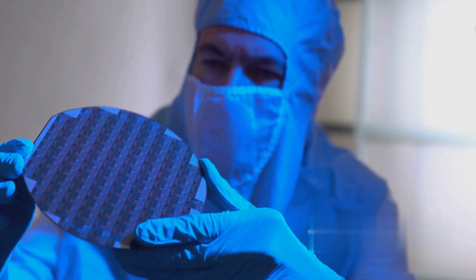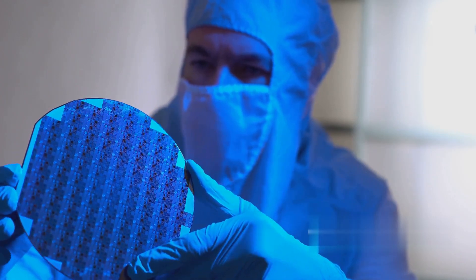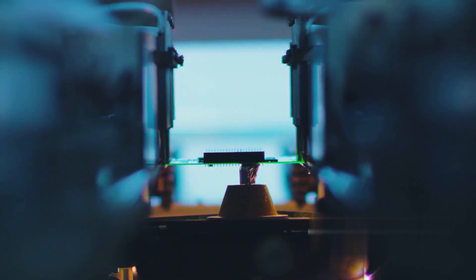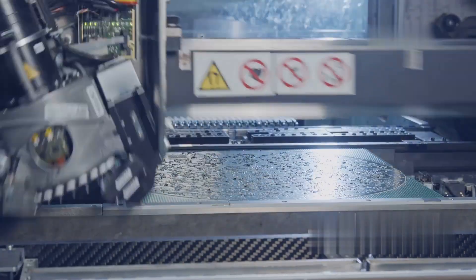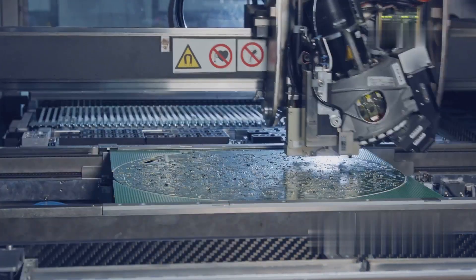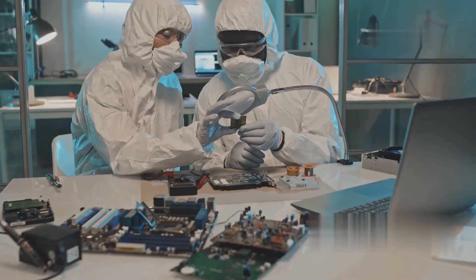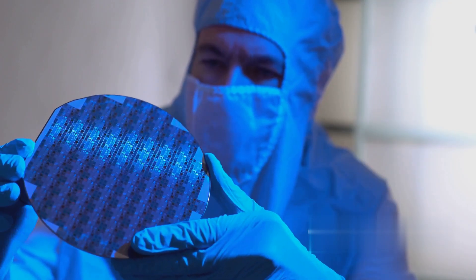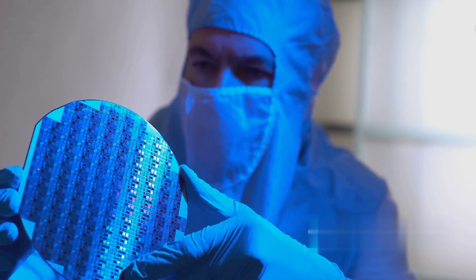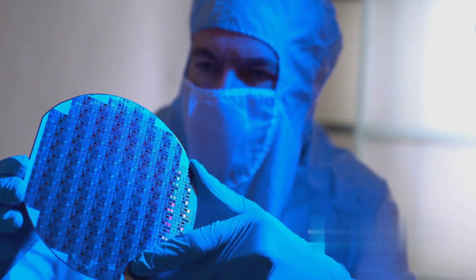The unexposed photoresist remains acting as a protective mask for the underlying silicon dioxide layer. This process, repeated multiple times with different masks, creates the intricate layers of the transistor structure. Photolithography is a high-precision process requiring meticulous control over the alignment of the mask, the intensity of the light, and the development time. The smallest features on modern chips are measured in nanometers, requiring extreme ultraviolet light sources and sophisticated optics to achieve the necessary resolution.